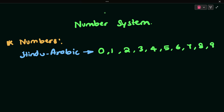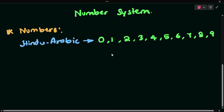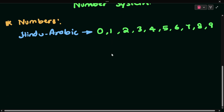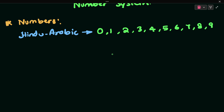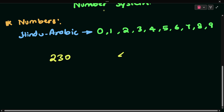Using these ten digits, we can create as many numbers as we want. Using just these ten digits, we can create any number. So these are the basic digits. This is a basic LKG concept. Numbers have ten digits: one, two, three, four, five, six, seven, eight, nine.